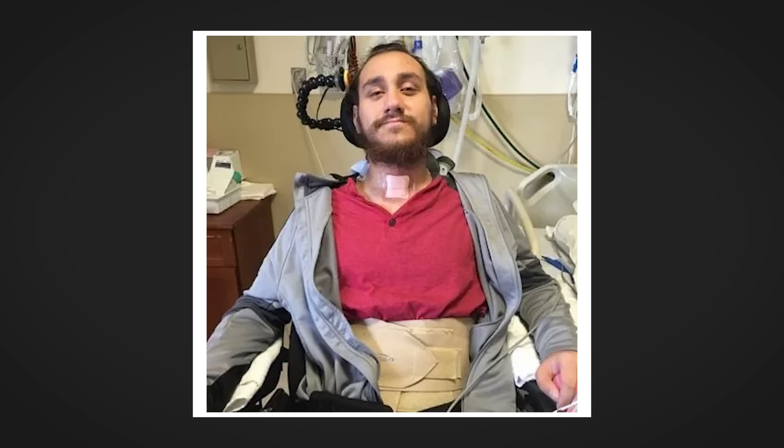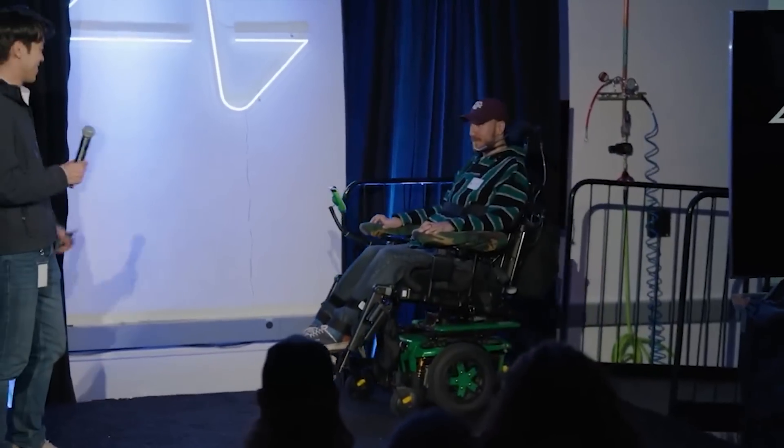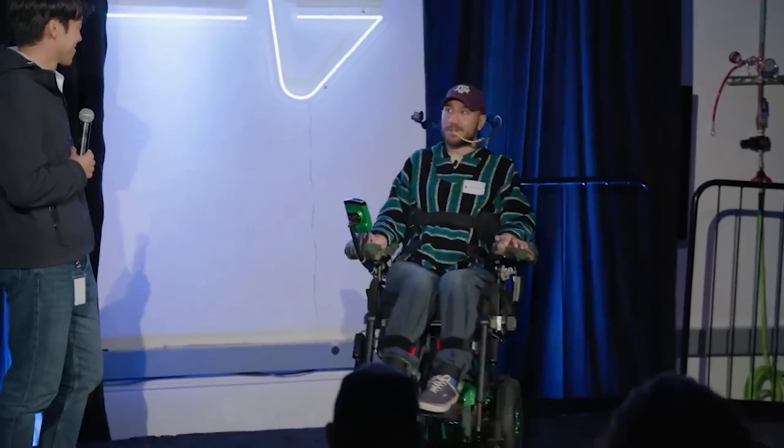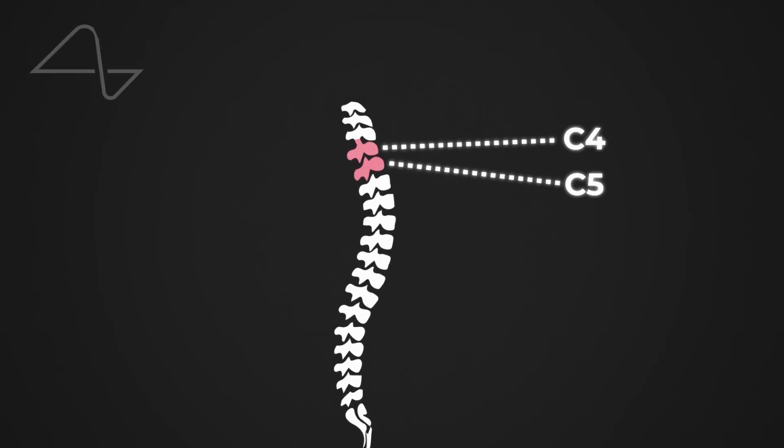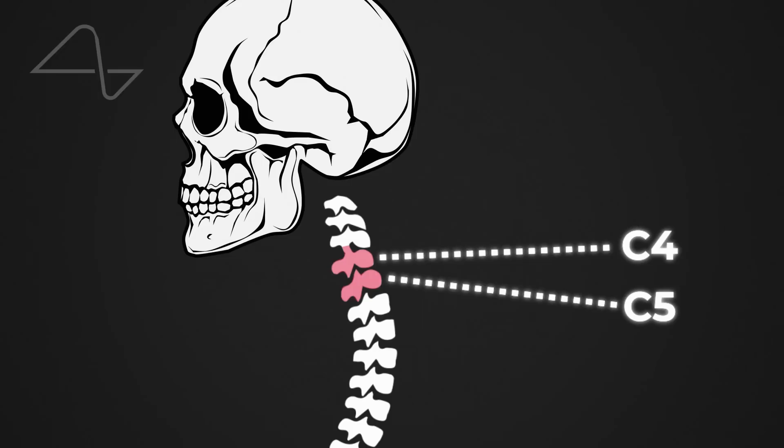Nolan is 29 years old and has spent the past 8 years living as a quadriplegic after a diving accident dislocated his C4 and C5 vertebrae. These are bones kind of right in the middle of the neck, halfway between your collarbone and the base of your skull.